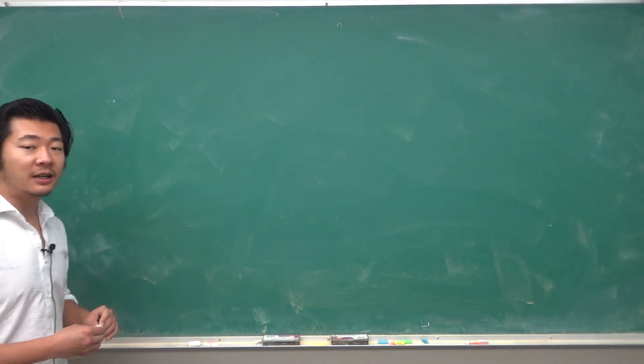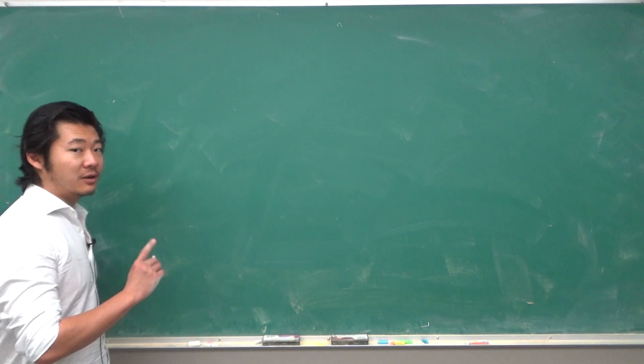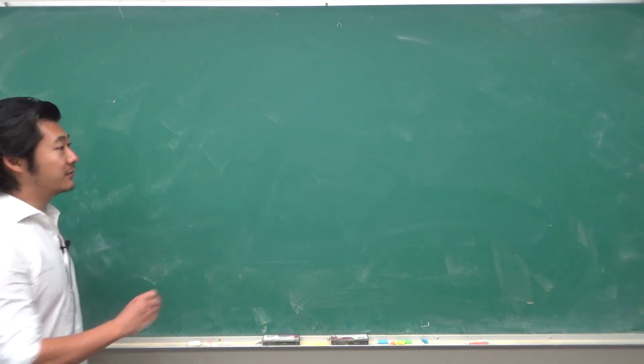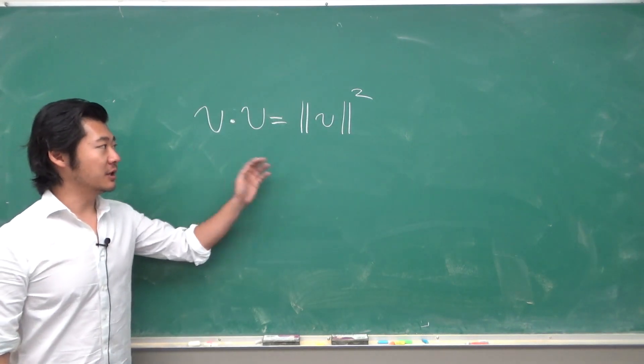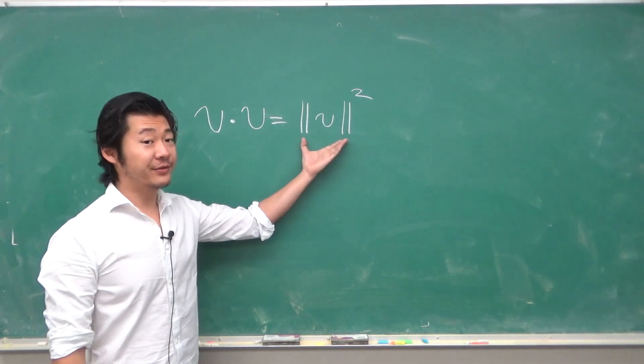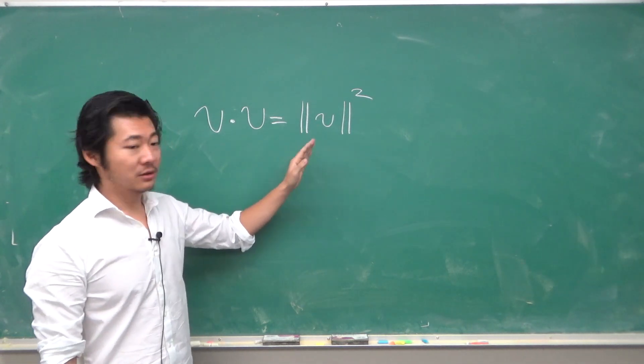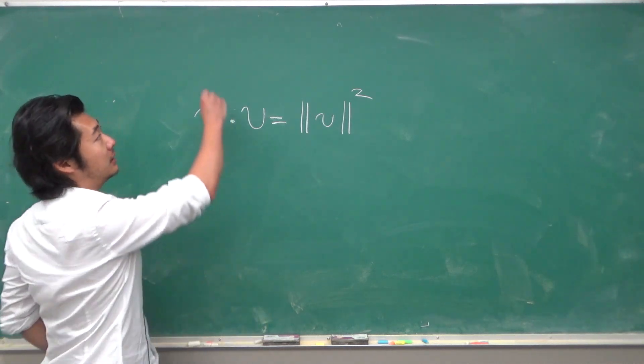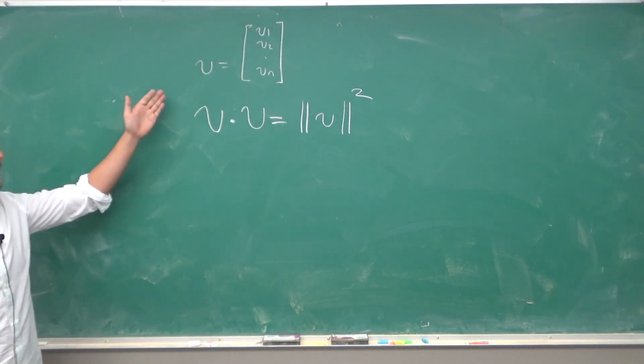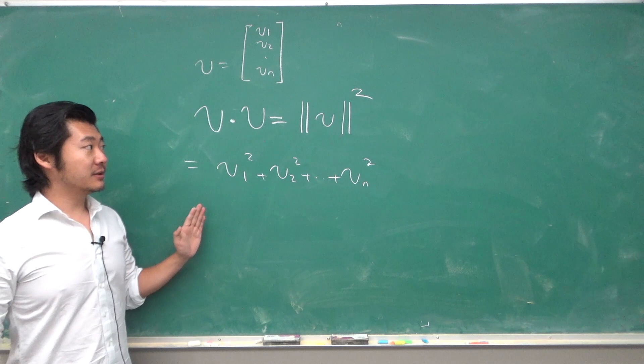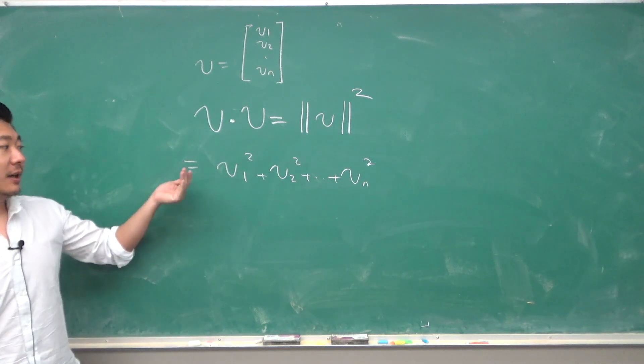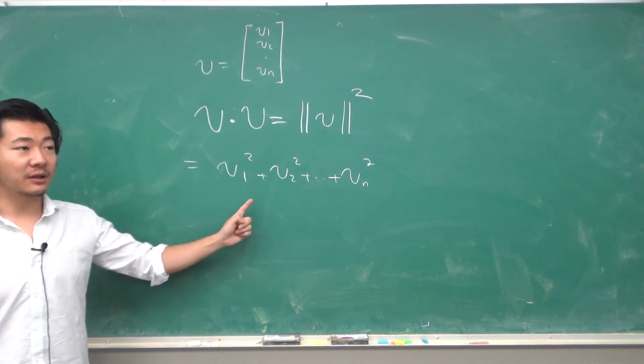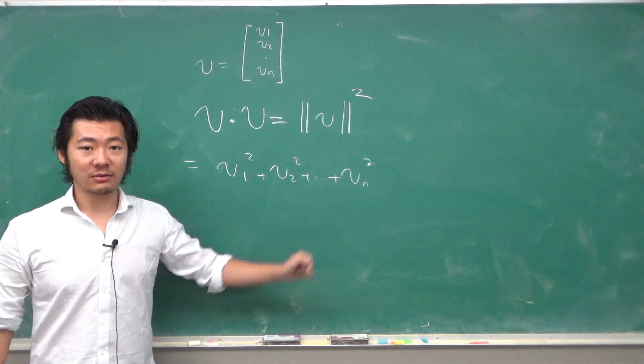So one of the key properties of the inner product is the inner product of the vector with itself. So we'll use the notation, this absolute value looking thing, but with two bars. This is called the norm or length of the vector, and if V is some vector like this, then the length squared of V is just V1 squared plus V2 squared plus all the way to Vn squared.